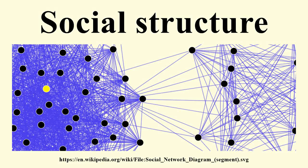In the social sciences, social structure is the patterned social arrangements in society that are both emergent from and determinant of the actions of the individuals.